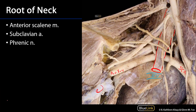The anterior scalene muscle allows us to differentiate the first part of the subclavian artery, which is medial to it; the second part, which is posterior to it; and the third part, which is lateral to it — all the way out to the lateral border of rib 1, where we transition from the third part of the subclavian artery to the axillary artery, which continues on through the axilla, or colloquially the armpit.